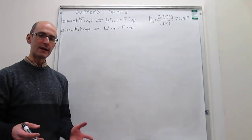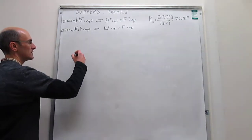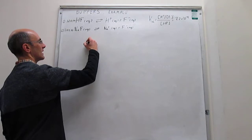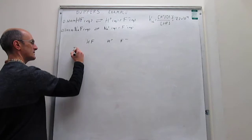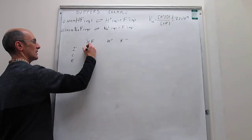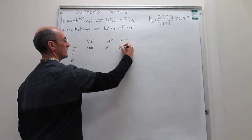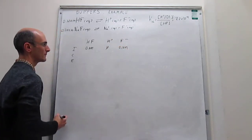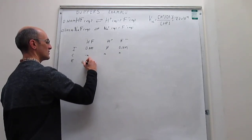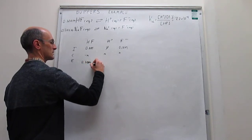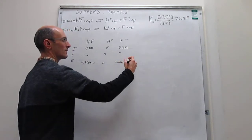The first thing we're going to do is calculate what the pH of this buffer solution is. To do that, you set up an ICE diagram for the acid dissociation process: HF ⇌ H⁺ + F⁻. The ICE diagram has 0.1 molar HF, no protons initially, and 0.1 molar fluoride. The change is −X, X, and X, giving equilibrium concentrations of 0.10 − X, X, and 0.10 + X.